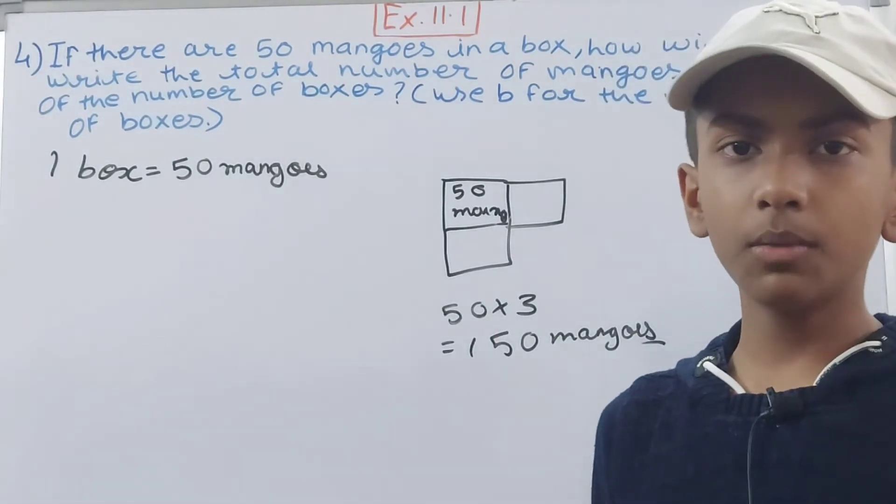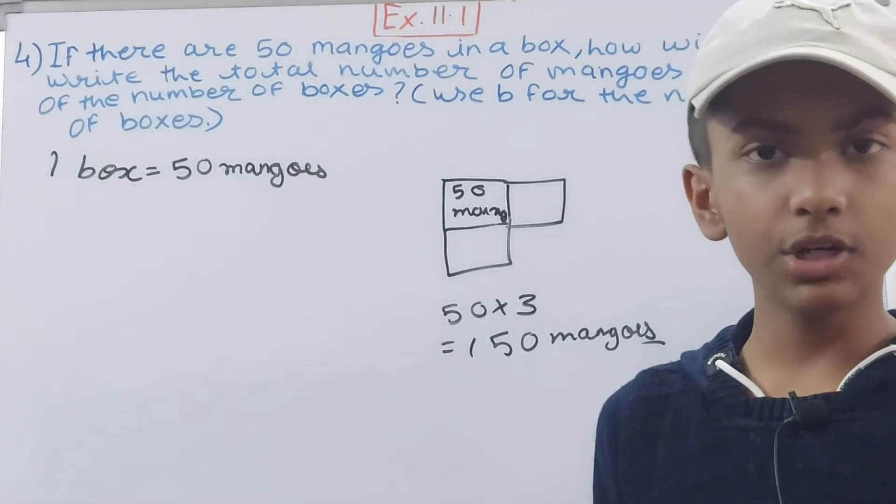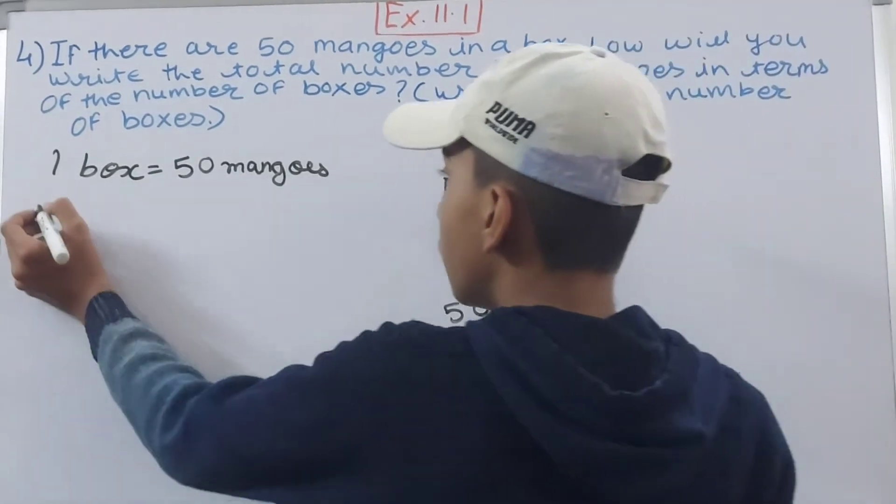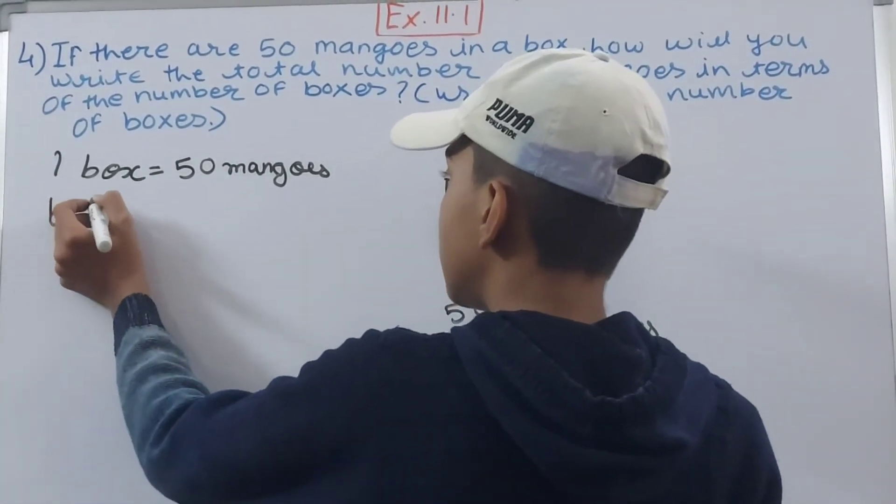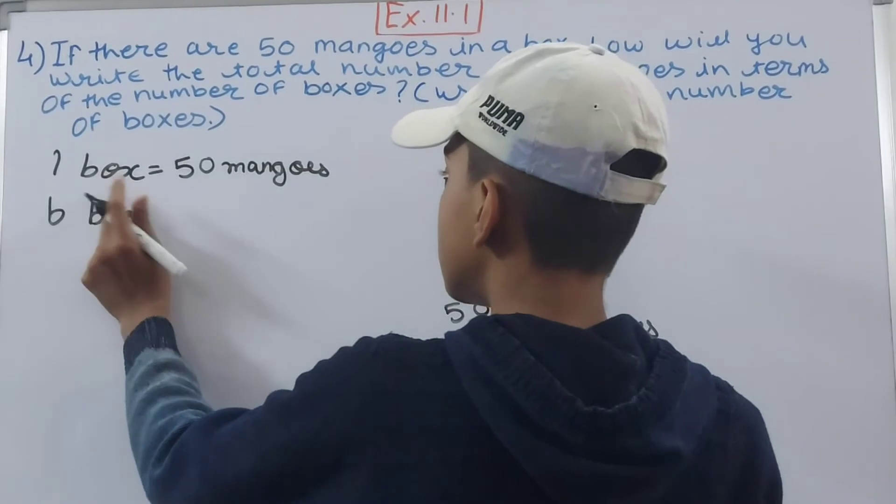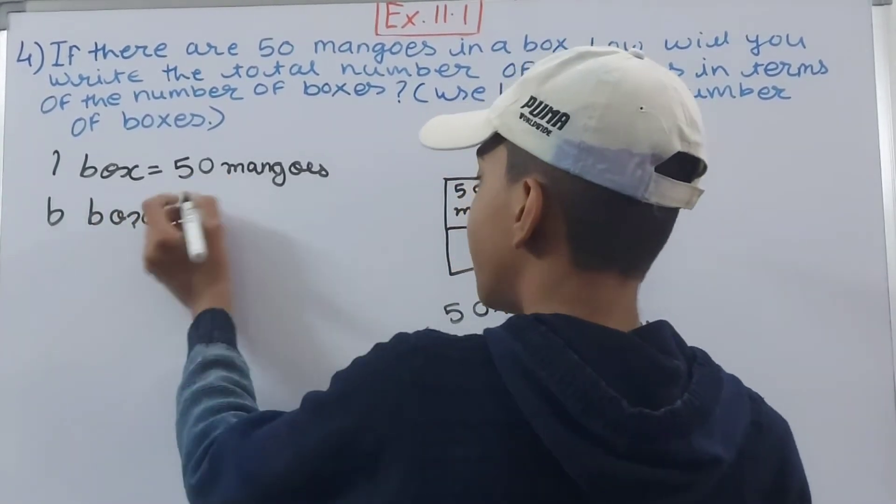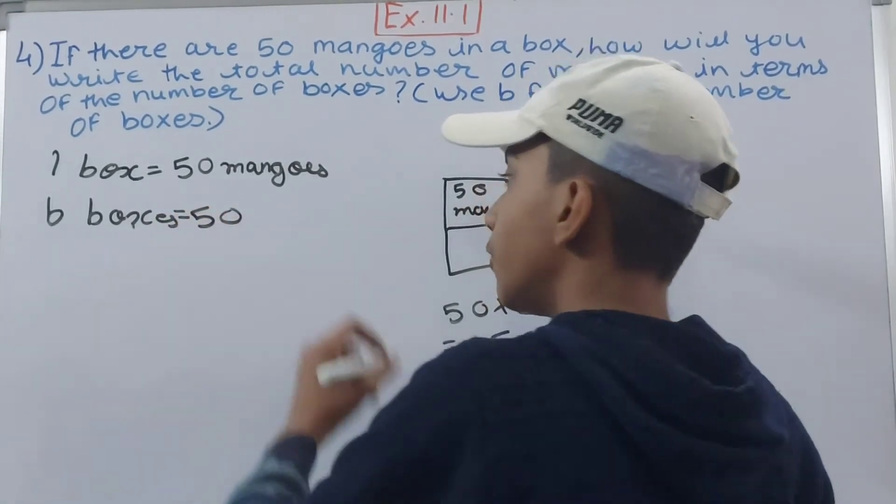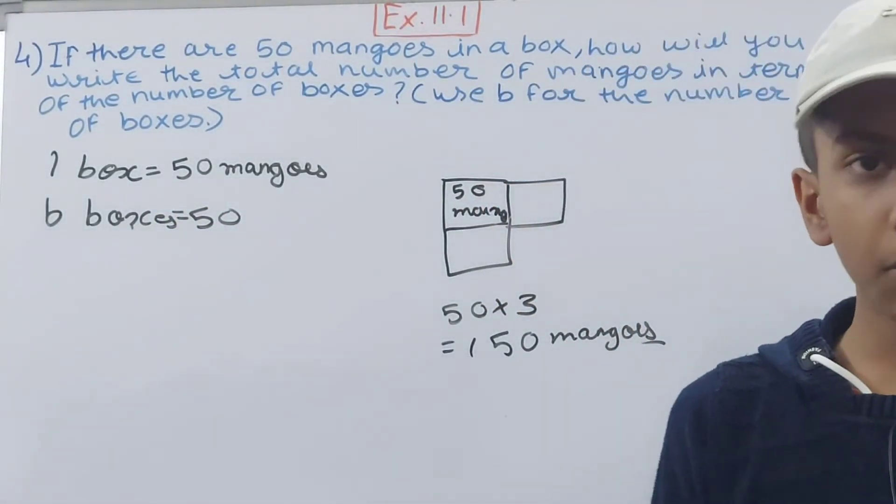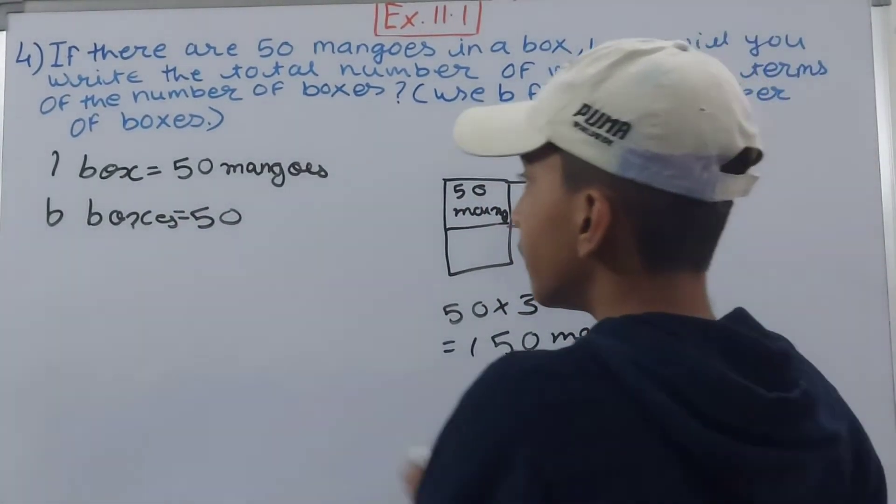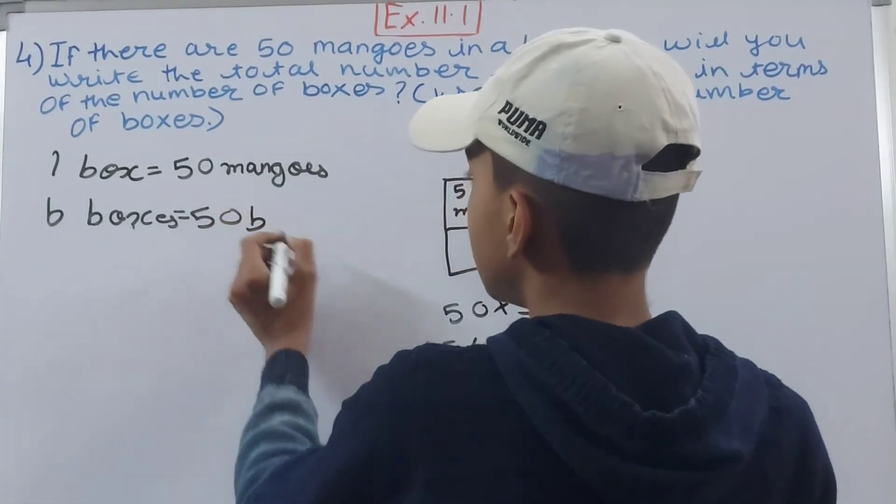...for b. So we take it as a variable. In b boxes, how many mangoes will we have? Simple: first of all, 50, which is the number of mangoes in one box, and that number of boxes, that is b here, which we are assuming.